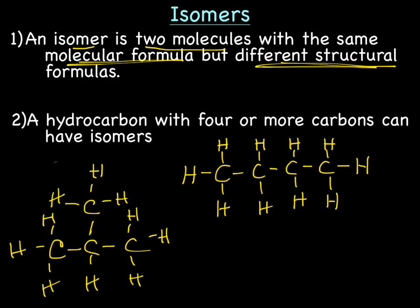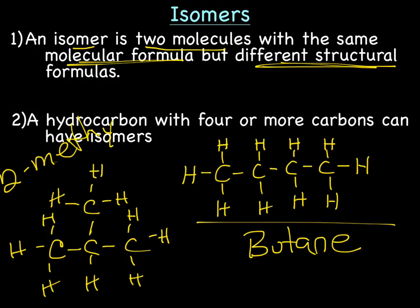So the name of this guy would be butane, and the name of this guy here would be 2-methylpropane. Okay, so two completely different structures but with the same molecular formula. That's an isomer.